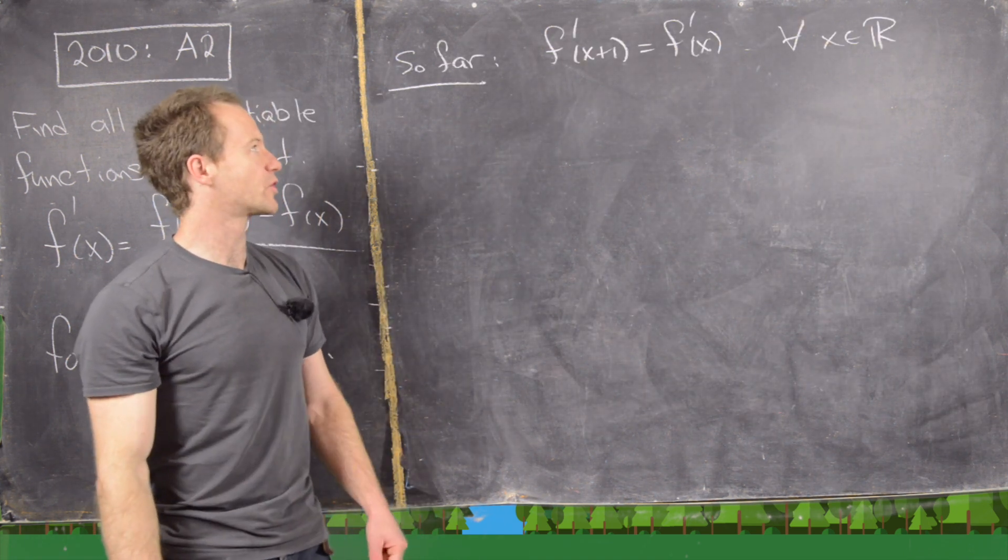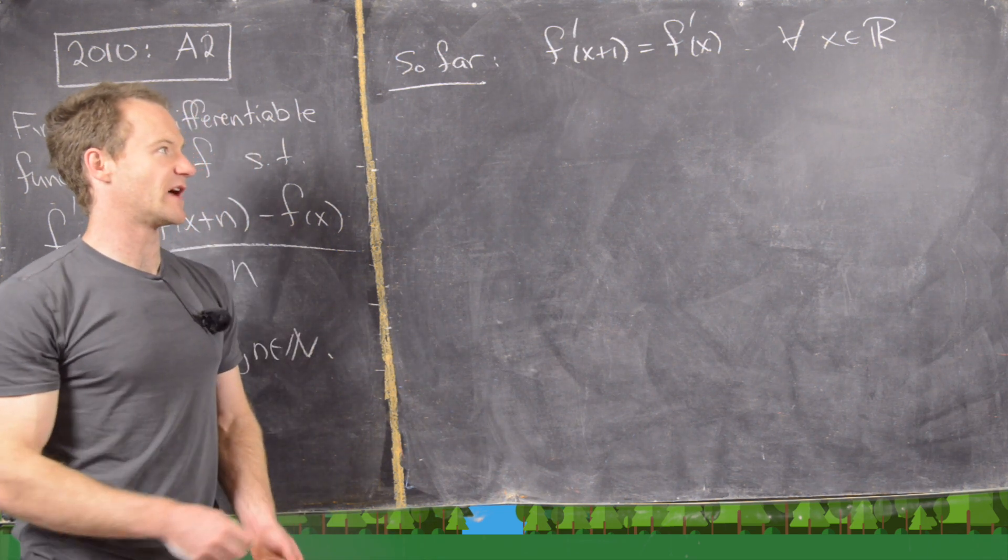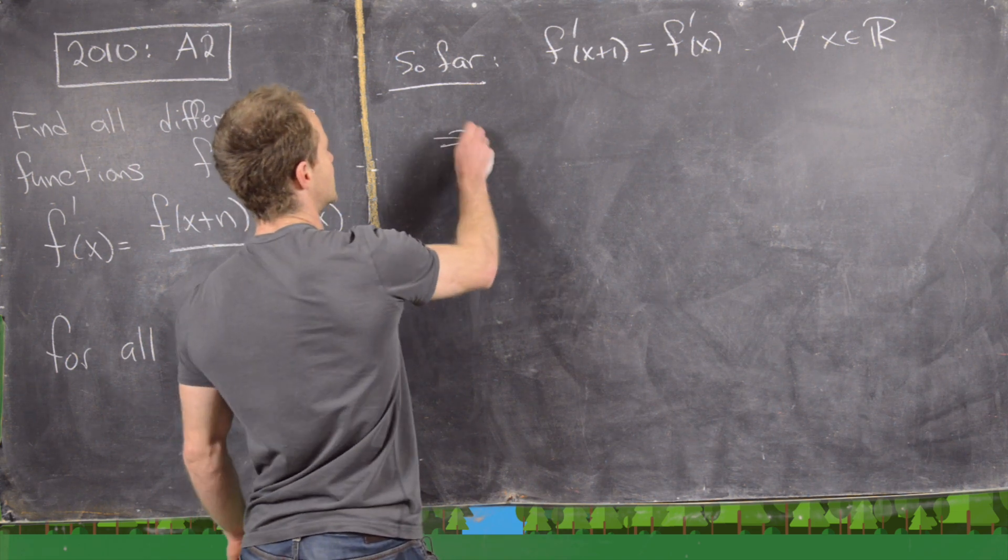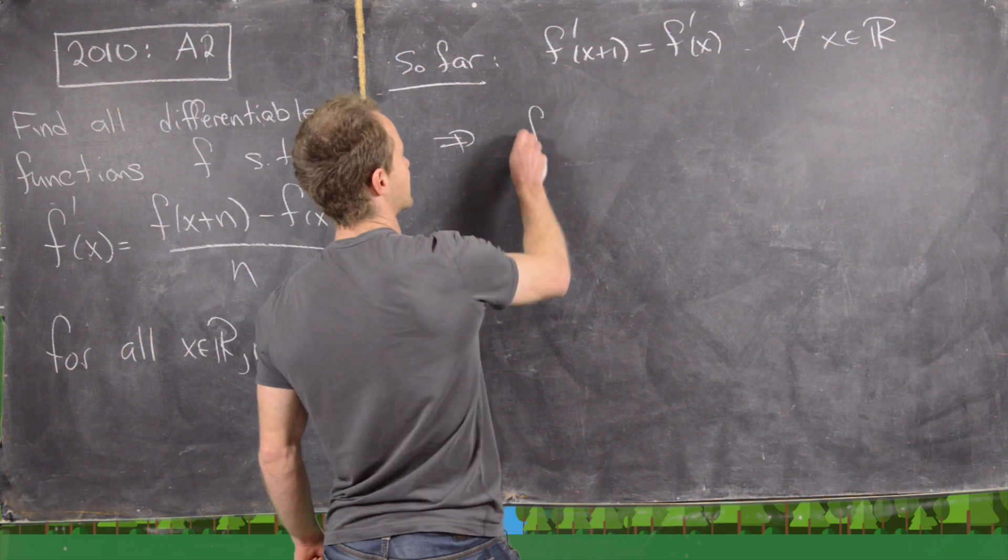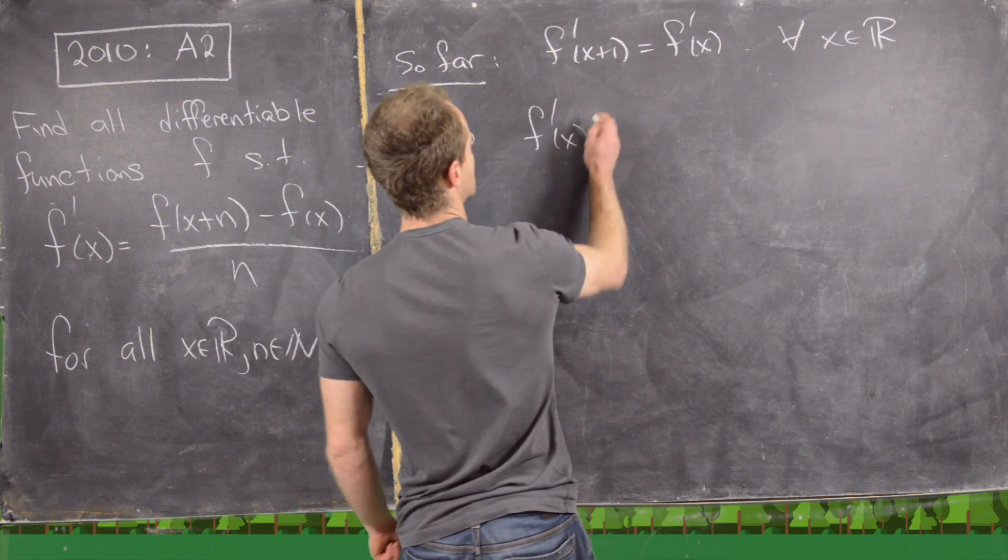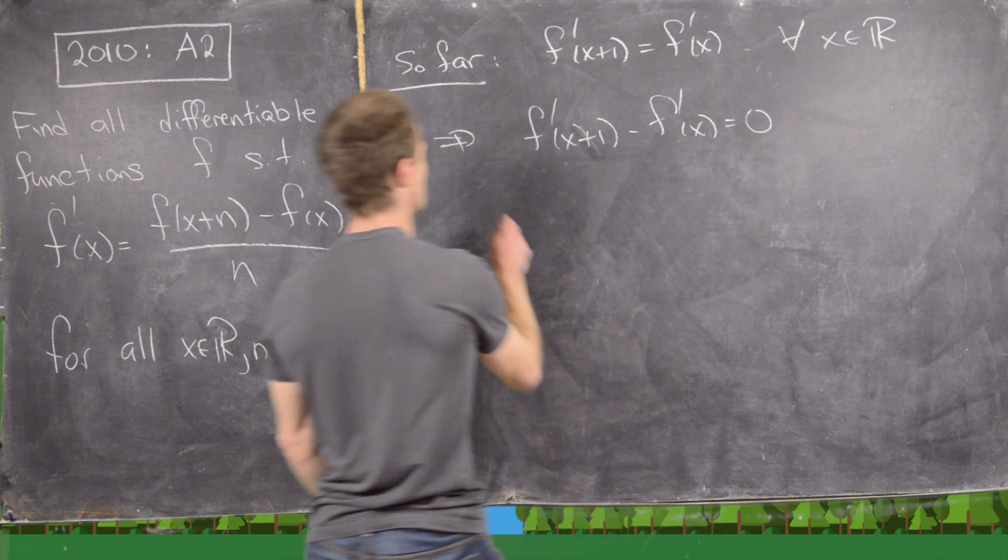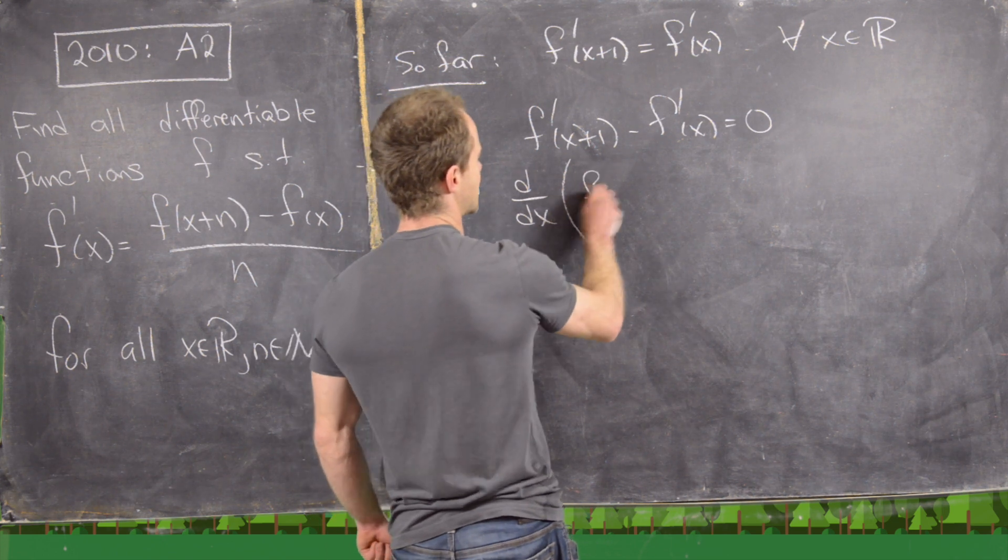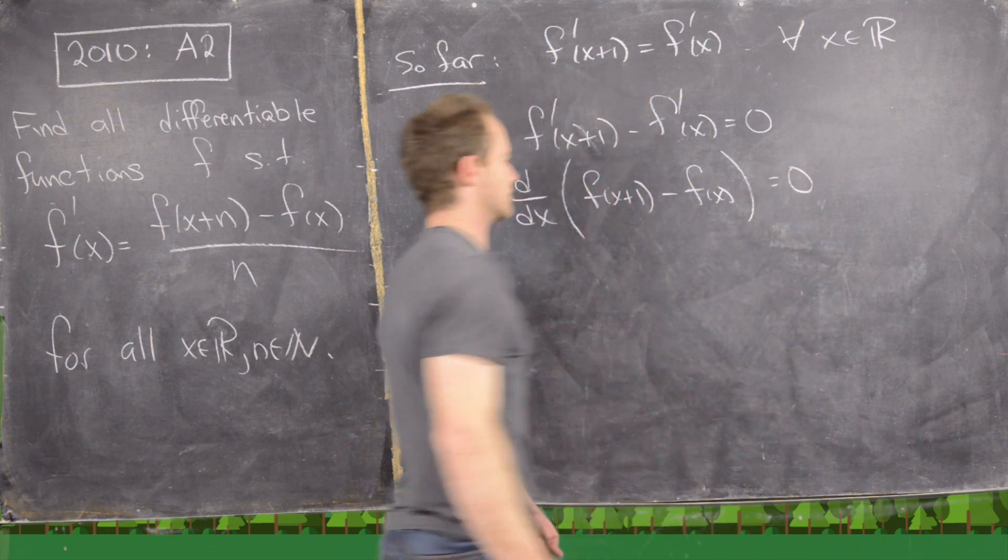So so far we've proven that f'(x+1) equals f'(x) and that's true for all x in R. Now the next thing that we can do is maybe subtract f'(x) from both sides. And notice that's going to give us f'(x+1) minus f'(x) equals 0. In other words, the derivative of the function f(x+1) minus f(x) equals 0.